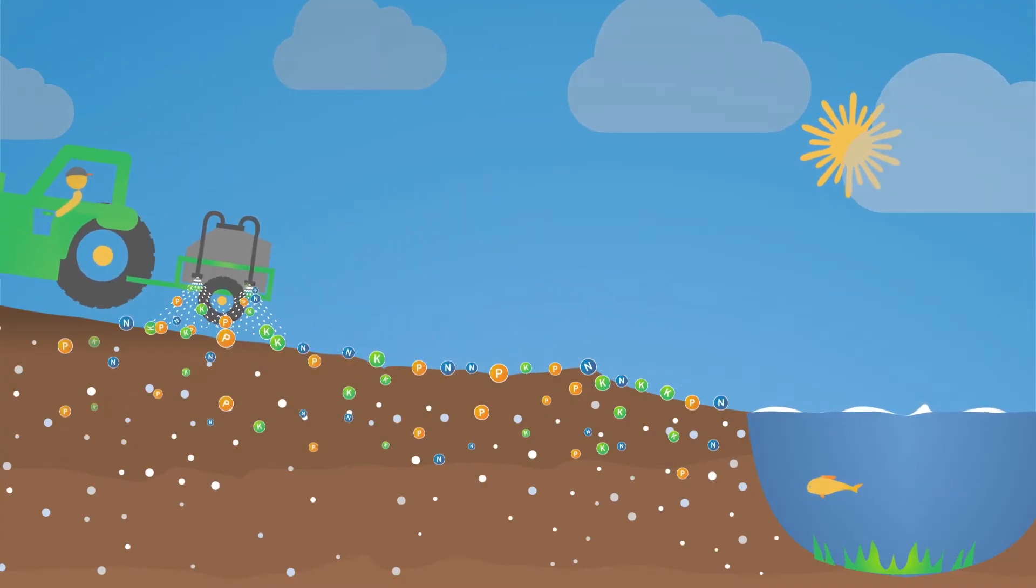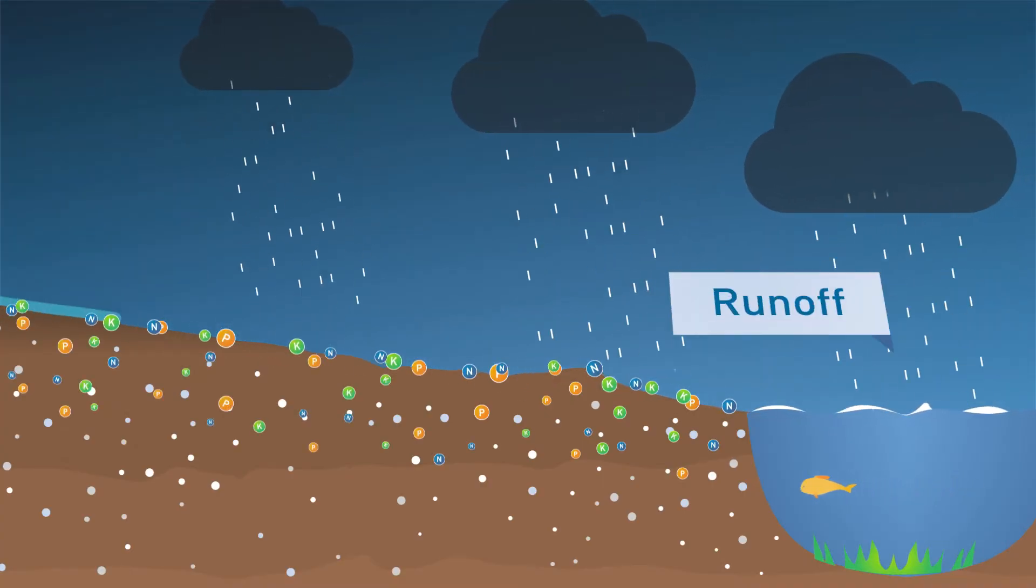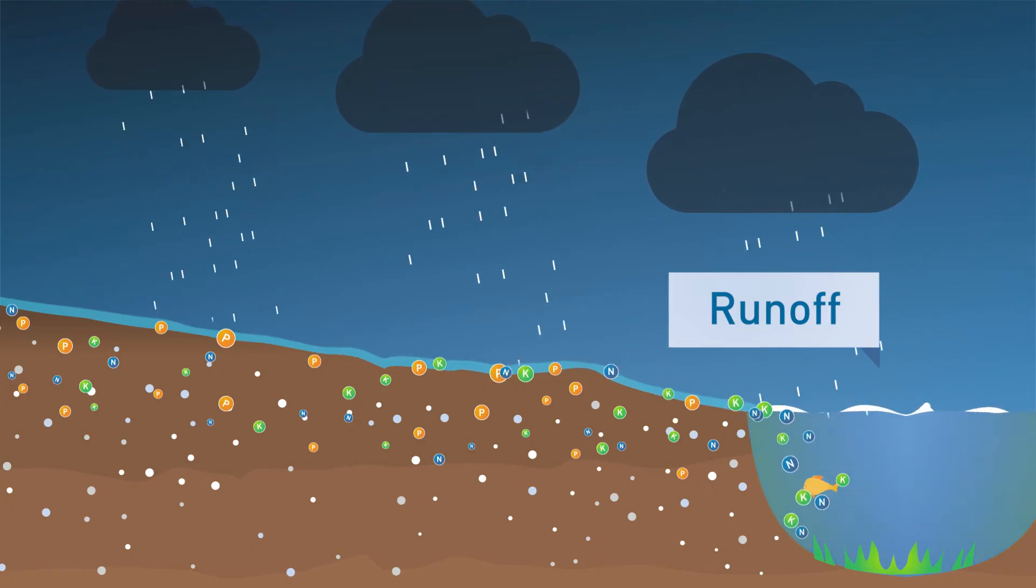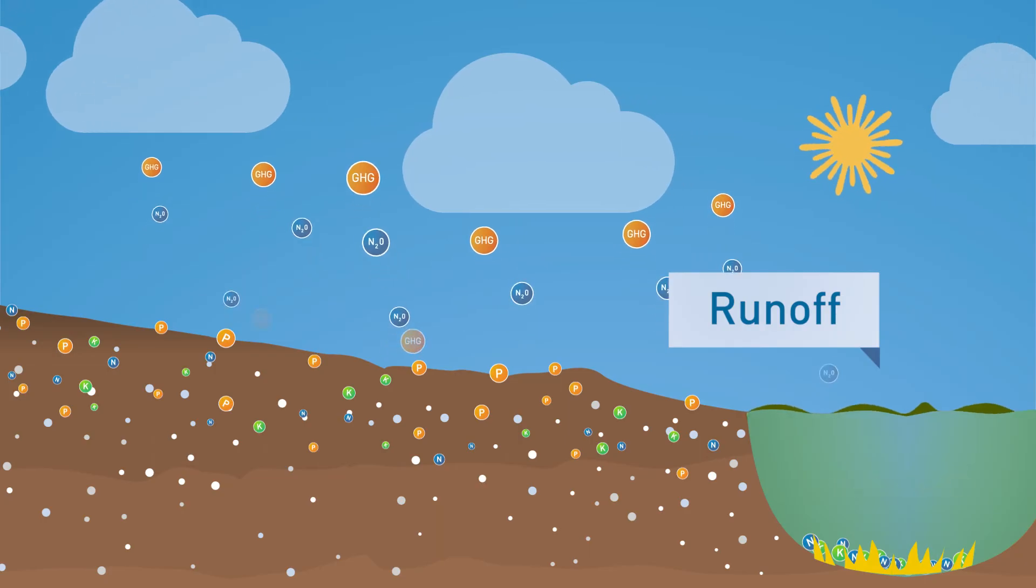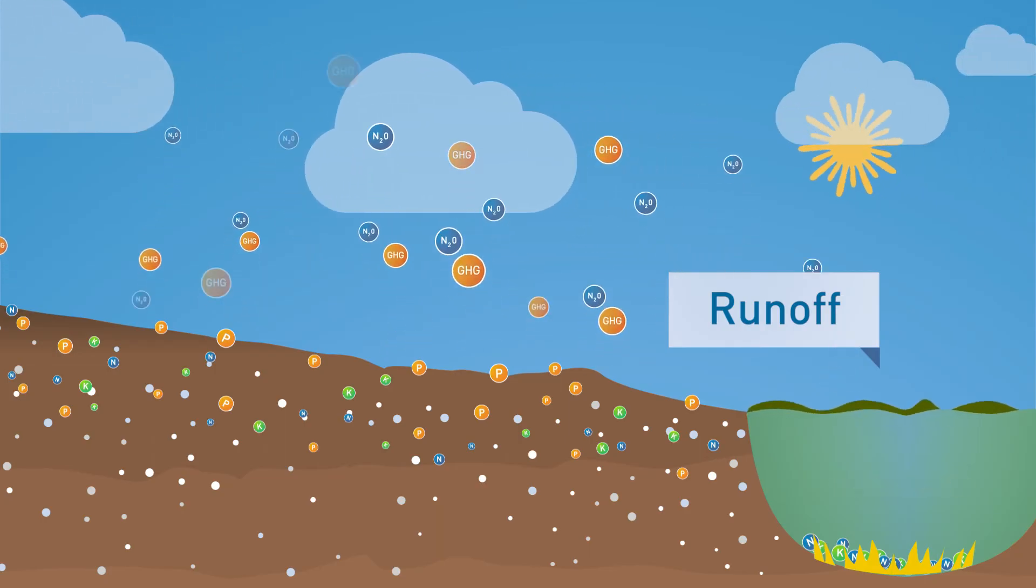Here, the nutrients are being applied on the surface, so they are at risk of being lost to the environment. Too many losses can cause negative impacts on the air, water quality, and habitats. In the long run, it's not sustainable.